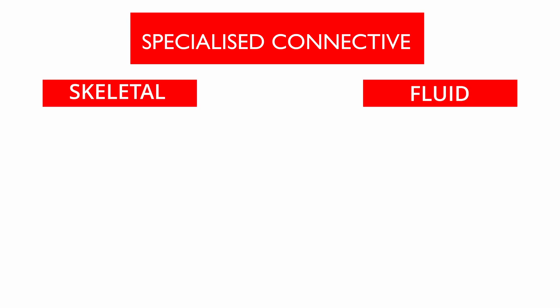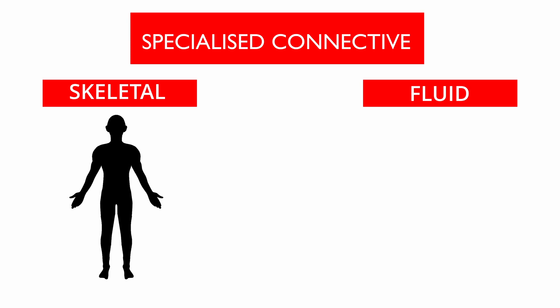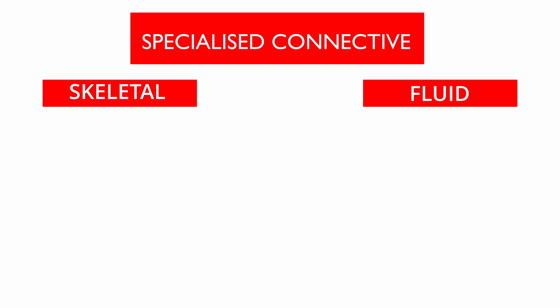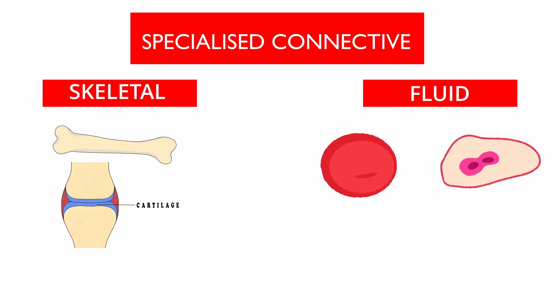Going back to specialized connective tissue, we can see it is divided into two types: skeletal and fluid. Skeletal connective tissues provide structural framework to the body and construct the body skeleton, whereas fluid connective tissues help in the transportation of substances around the body. Skeletal connective tissue has bones and cartilages, whereas fluid connective tissue has blood and lymph.